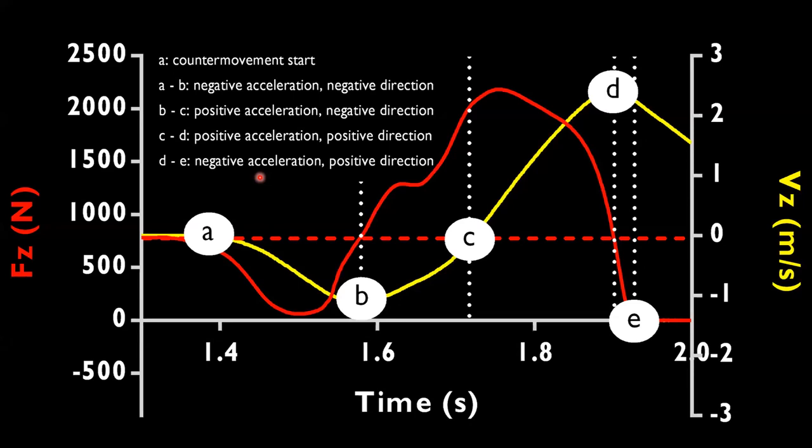We all know that force equals mass times acceleration, and we can use that relationship to start getting more information from my force-time data. I've done some relatively simple calculations here, and you can see that the red curve is our force data from a countermovement jump like the one you've just seen, and the yellow line is our velocity data—so how quickly our jumper is moving and the direction that they're moving in.